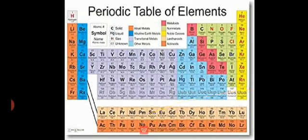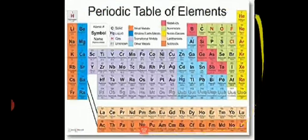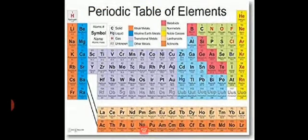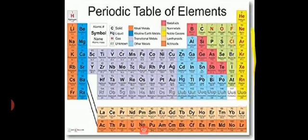The periodic table contains all the elements — whether in gaseous, solid, or liquid form — arranged based on their similarities and differences. A color key helps identify element groups. For example, yellow indicates noble gases and green indicates non-metals, making it easy to identify elements quickly.